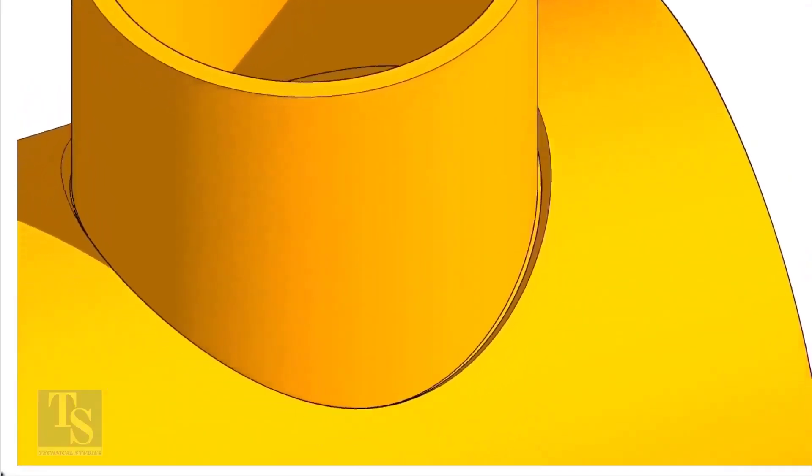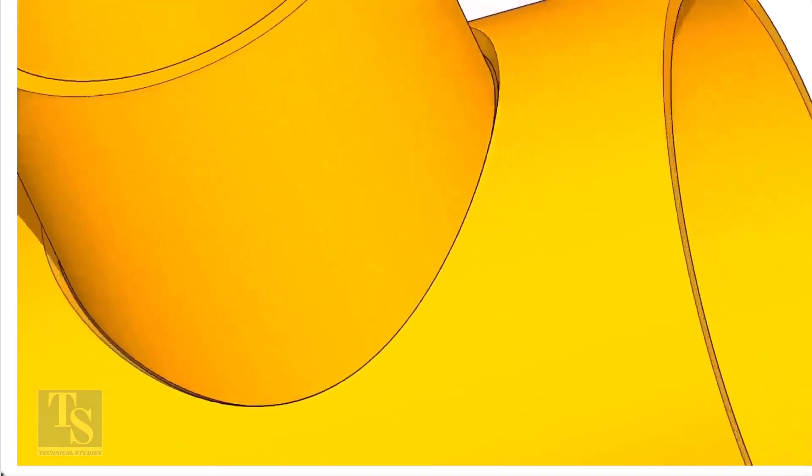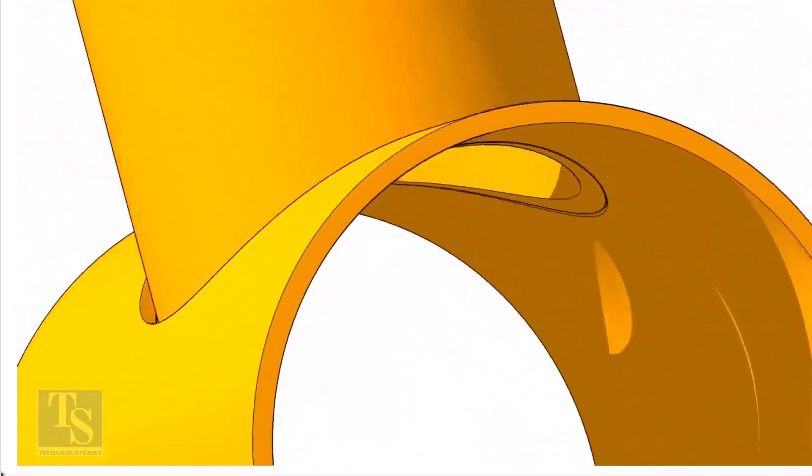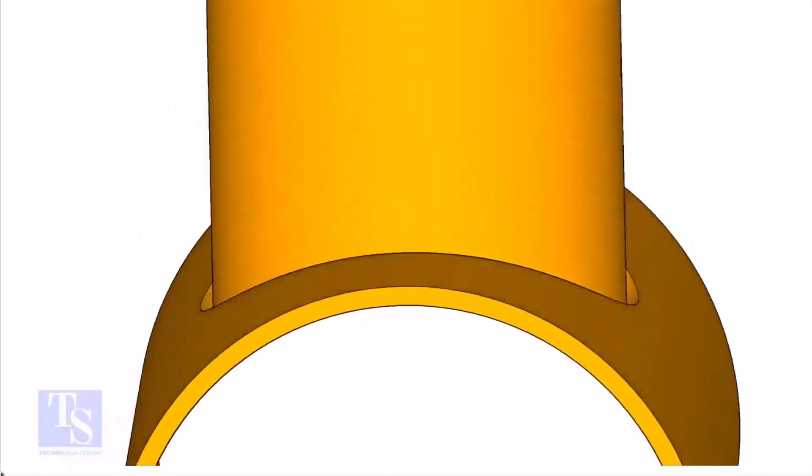On the branch pipe, there is no bevel preparation, but the cut-back cut is done. The end of the branch is level with the inside diameter of the header pipe.